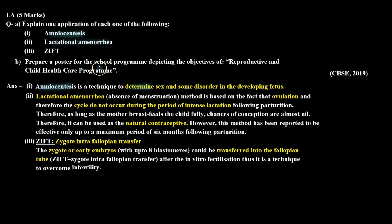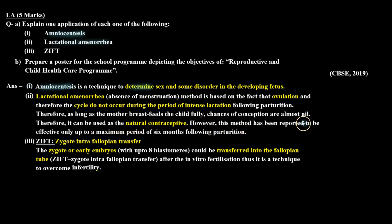Second part: lactational amenorrhea application. It is a natural contraceptive. When parturition occurs in a female, i.e., after the baby's delivery, for up to six months during lactation, the menstrual cycle does not occur. So if coitus happens during that period, chances of conception are not there. Lactational amenorrhea, that is absence of menstruation, is based on the fact that ovulation and therefore the cycle do not occur during the period of intense lactation following parturition. Therefore, as long as the mother breastfeeds the child fully, chances of conception are almost nil, and it can be used as a natural contraceptive. However, this method has been reported to be effective only up to a maximum period of six months following parturition.